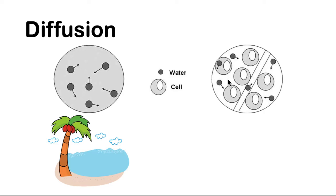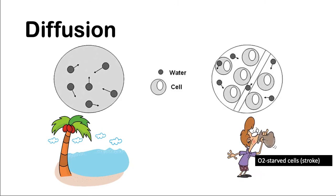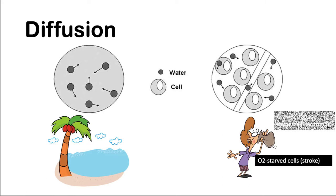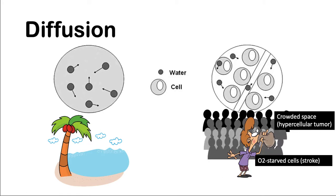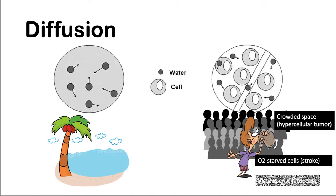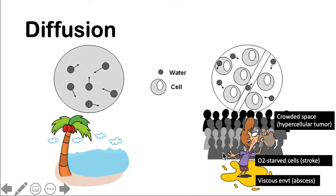Let's take three instances. What if water is restricted within the cell, such as what would happen if we have a stroke, or if the membrane pumps are unable to function, or if a cell is within a crowded space such as a hypercellular tumor, or within a viscous environment such as an abscess? What will happen to the movement of water in those cases?